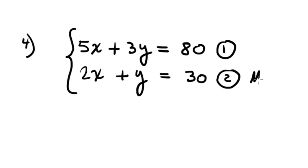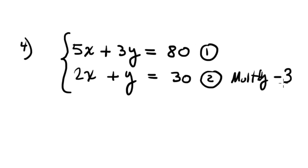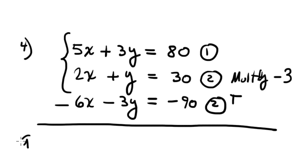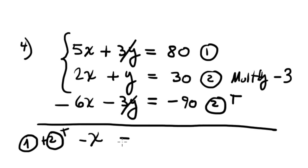Multiply equation 2 by negative 3: we get negative 6x minus 3y equals negative 90, equation 2 transformed. Adding equation 1 plus equation 2 transformed: 5x and negative 6x give negative x; positive 3y and negative 3y cancel out; on the right-hand side we have negative 10. Dividing by negative 1, x equals positive 10.